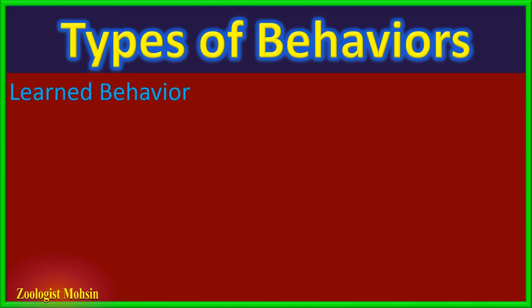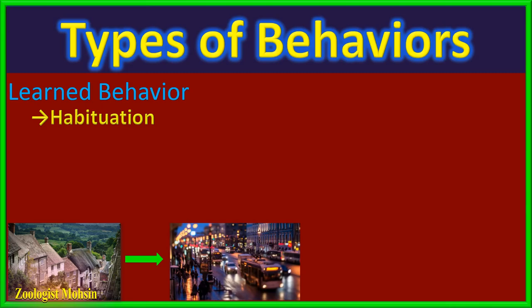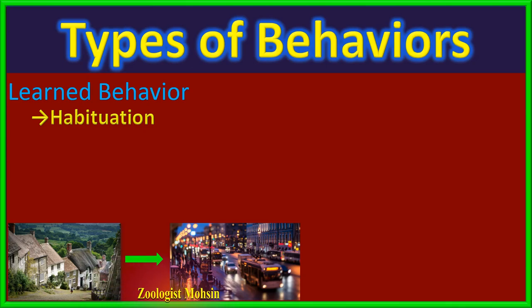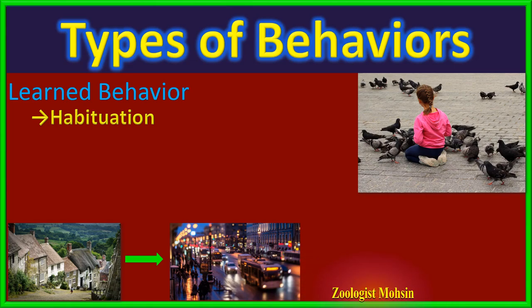The first type of learned behavior is habituation. When someone migrates from a peaceful countryside to a noisy city, they will feel disturbance due to engine sounds, horns, and heavy traffic. If they stay in the city for a week, they become used to the surroundings and their disturbance level decreases and ultimately vanishes — they become comfortable or habitual. Similarly, new pigeons landing on roads to eat grains show fear when someone comes close and fly away, feeling the stimulus is dangerous. But after repeating this several times with no danger found, they become habitual and stay with humans.